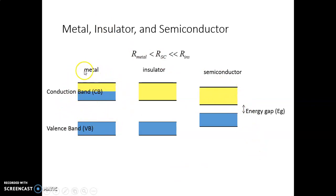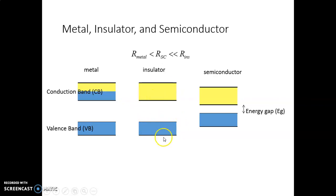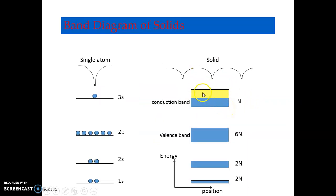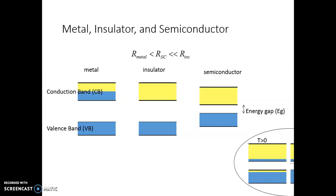Metals have a very low amount of energy gap. Insulators have a high amount of energy gap. In semiconductors, the gap is very small. In metals, the conduction band and valence band overlap — the yellow color indicates the conduction band — so there is no energy band gap. In insulators, there is a high level of energy gap with conduction band (yellow) and valence band (blue) clearly separated. In semiconductors, a small amount of energy gap exists.